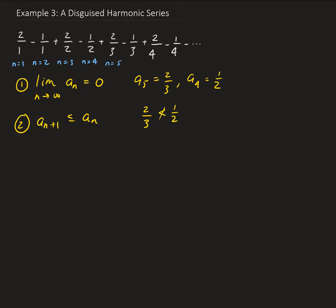So the second condition is ruled out. The second condition is not true for all n. In particular, here for the fourth and fifth term. Remember this second condition has to be true for all n. So therefore we can't conclude anything at this moment. Property two is not satisfied, so we can't apply the alternating series test.